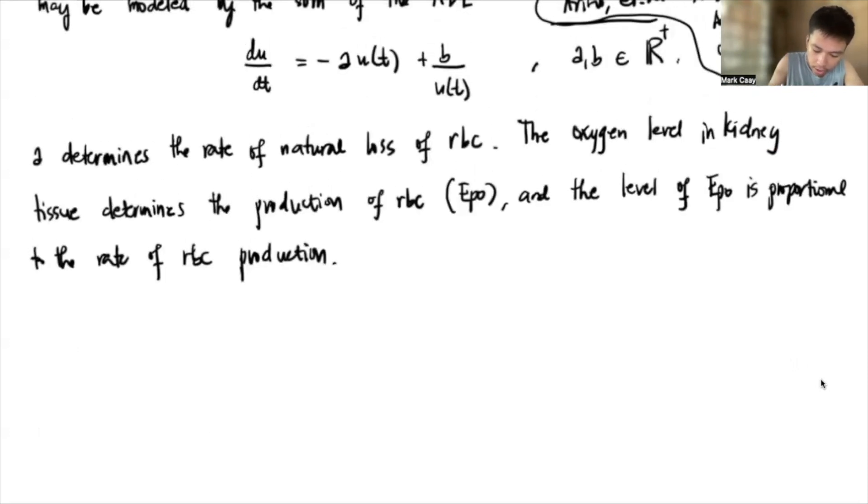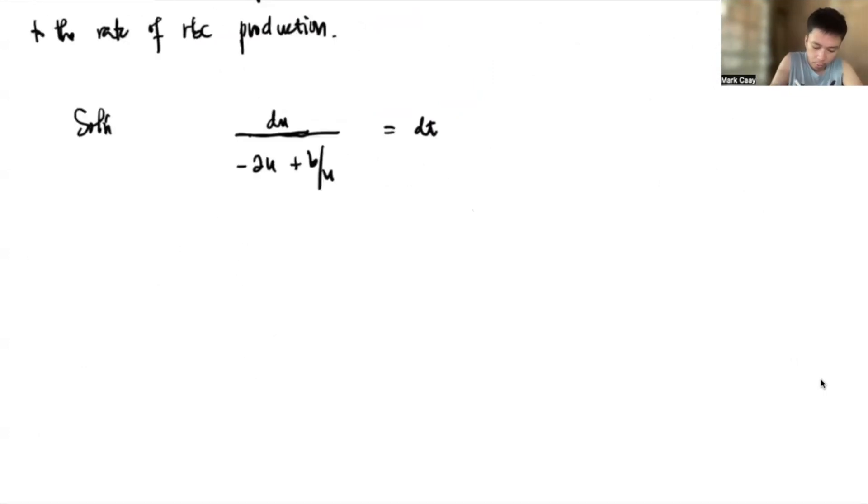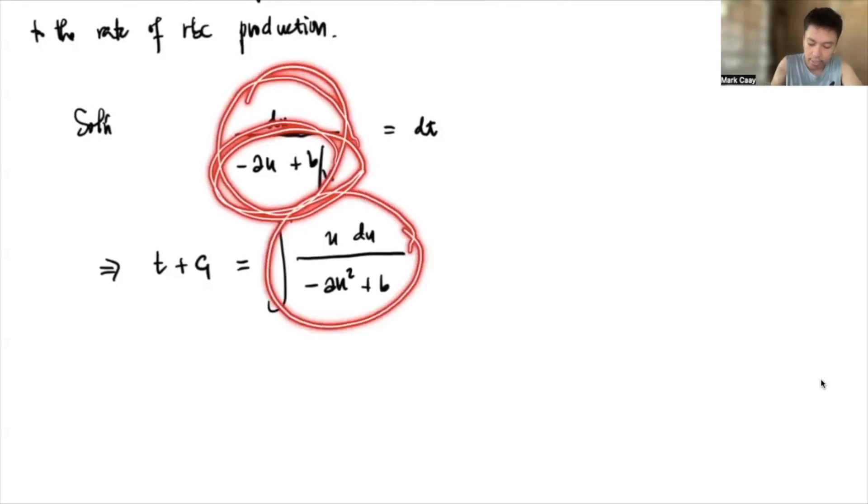Okay, so anyway, we want to solve this differential equation. So in order for us to do that, this one, we want to do the separation of variable. So I have du, and then, let's move this all to the denominator. So we'll have du over (-au + b/u), which is equal to dt. So if we want to integrate this, this becomes t plus c. C1 for now. And then, this one, we have integral of u du all over (-au² + b). You can check it for yourself. You have to simplify this and then simplify entirely. You actually get this.